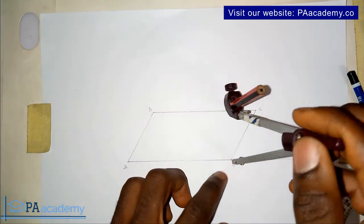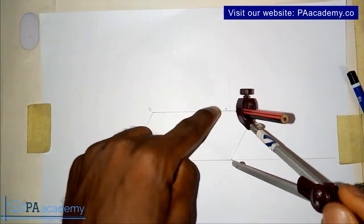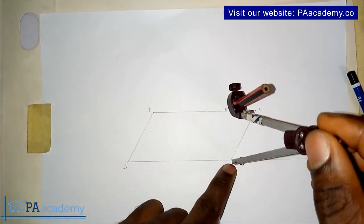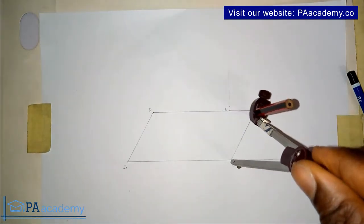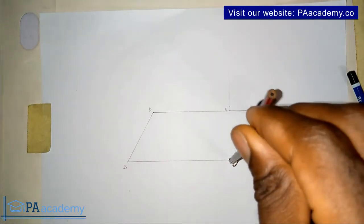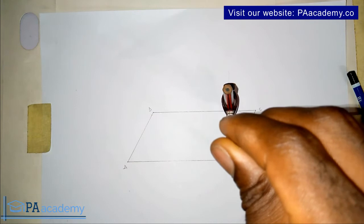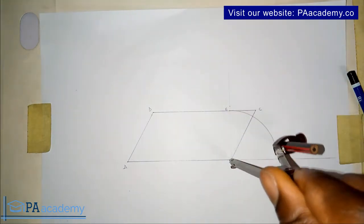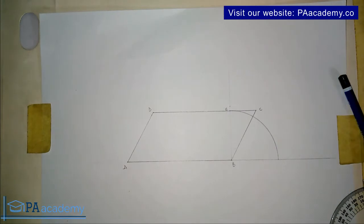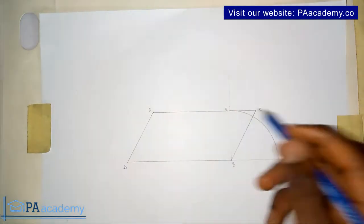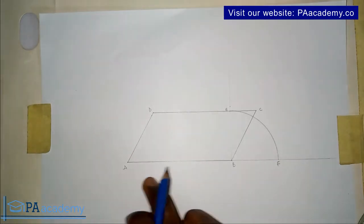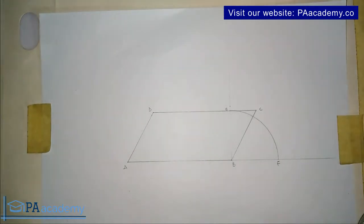From the distance between B and E, you are going to draw an arc. The arc will be to the right, touching the extended line AB. Let's call that point F.